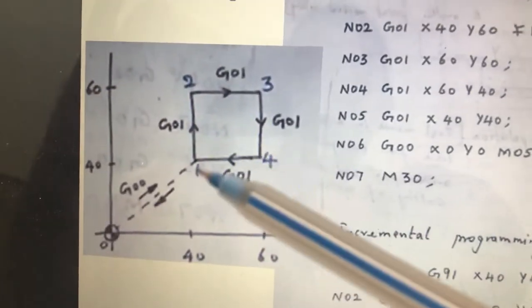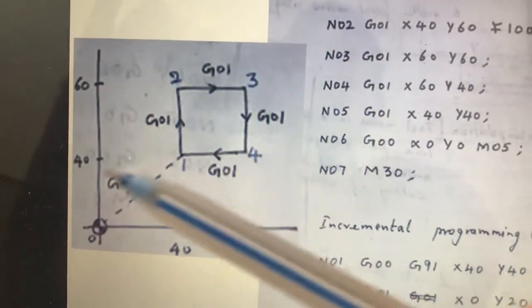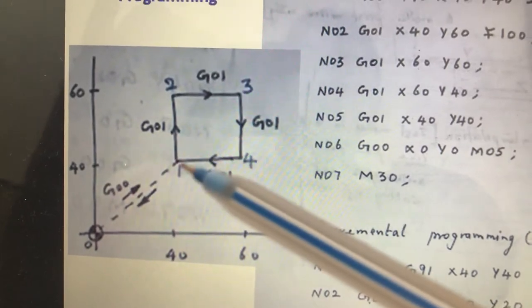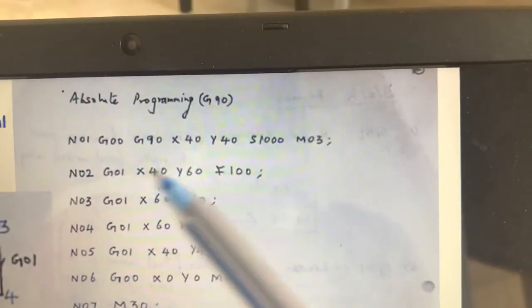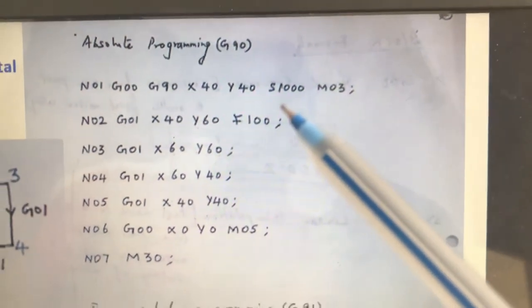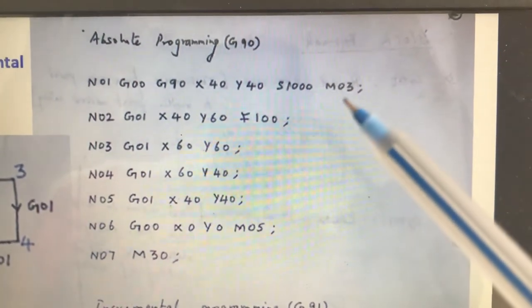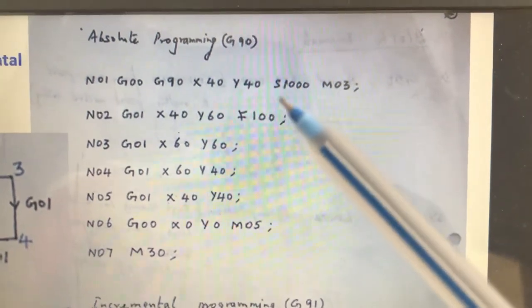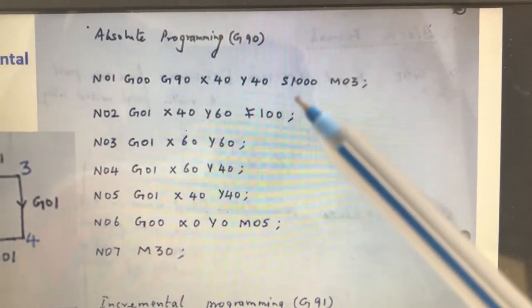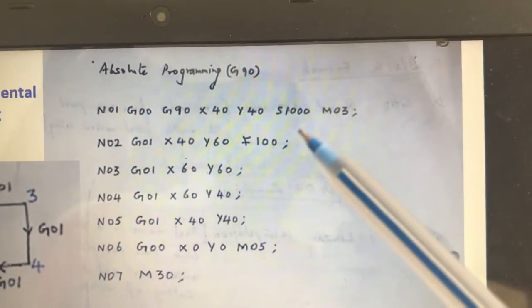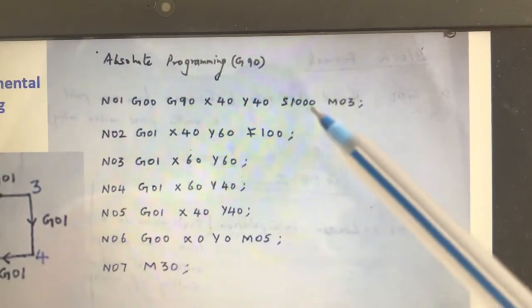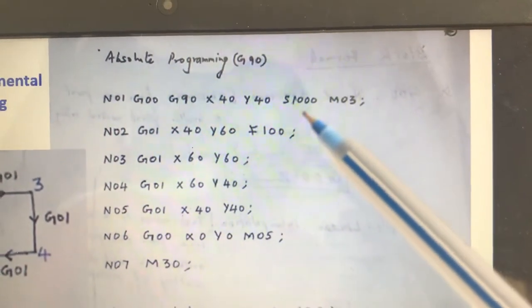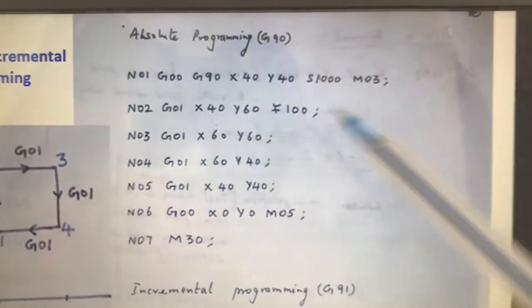X40, Y40 means at this point, the value of X and Y is 40, 40. And then it is asking for spindle speed. M03 means start spindle and you should immediately tell what is the speed of the spindle. S1000 means the spindle is rotating at an RPM of 1000.